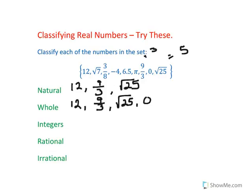Integers are whole numbers plus their opposites. So, let's write down all the whole numbers again, and negative 4.